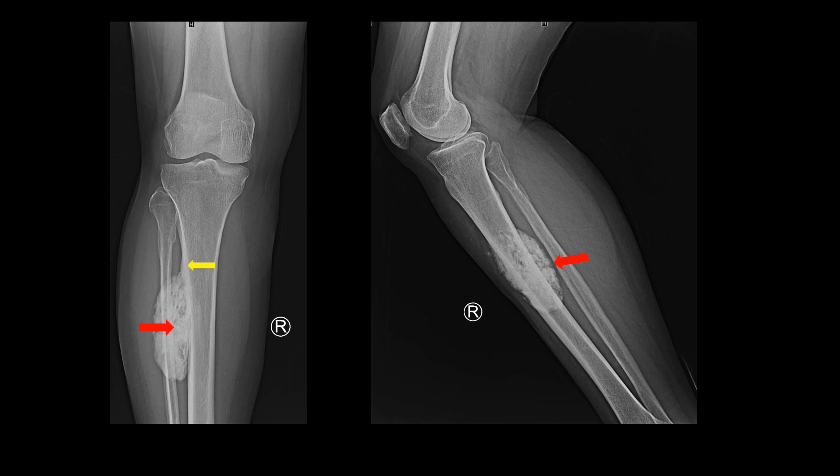With these imaging features, we come to a diagnosis of parosteal osteosarcoma. Now why is this not a case of myositis ossificans, which happens to be its closest differential? There are two findings which point against the diagnosis of myositis ossificans. Firstly, in the late stage of myositis ossificans, there is denser calcification peripherally compared to centrally, which is not so in this case. Also in myositis ossificans, there is no associated cortical thickening.